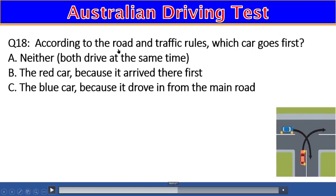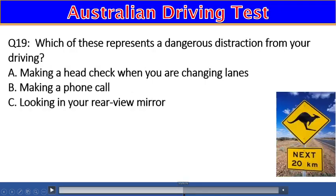Question 18: According to road and traffic rules, which car goes first — the blue car or the red car? A) Neither — both drive at the same time, B) The red car must go first, C) The blue car must go first as it is on the main road. The right answer is C — the blue car goes first because it is on the main road.